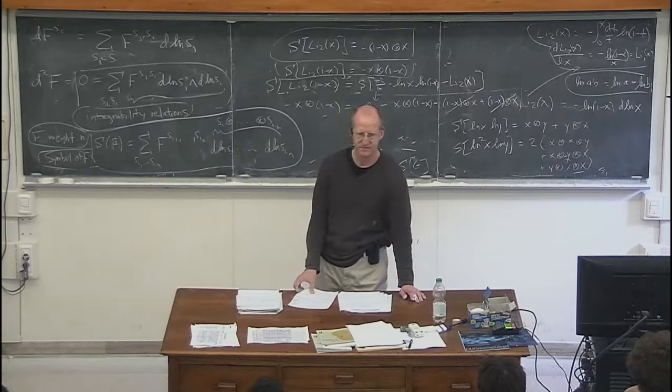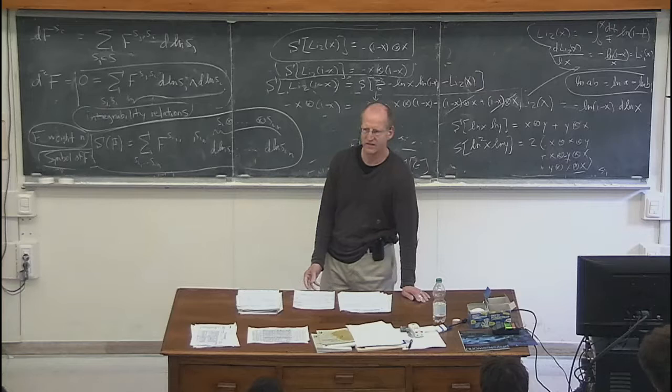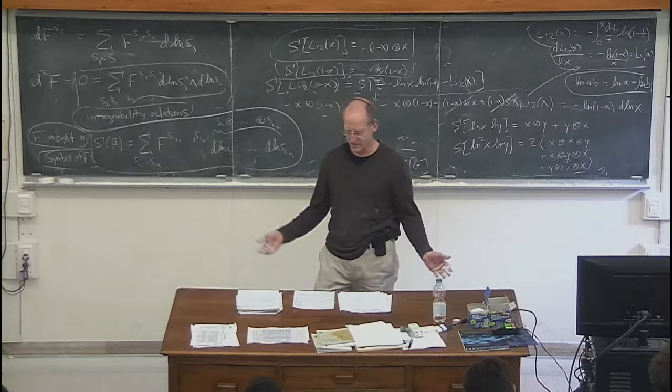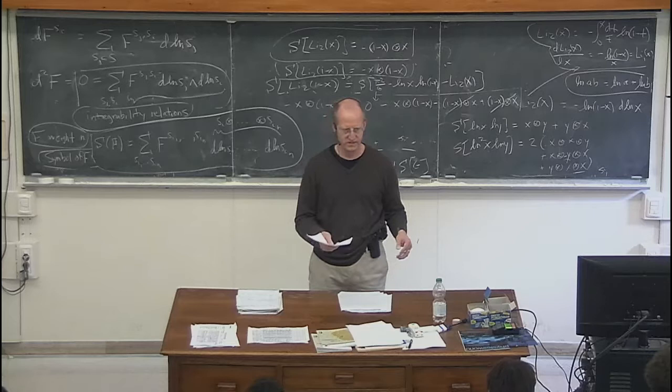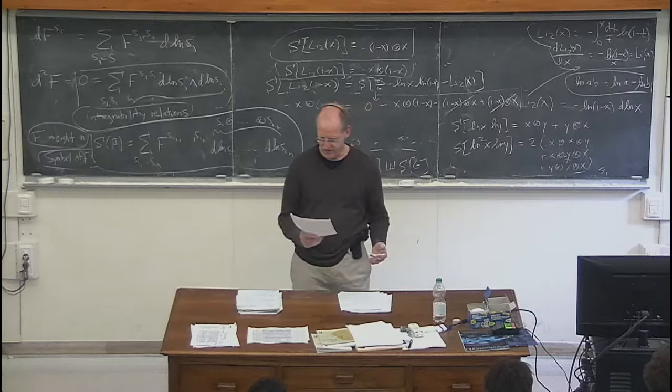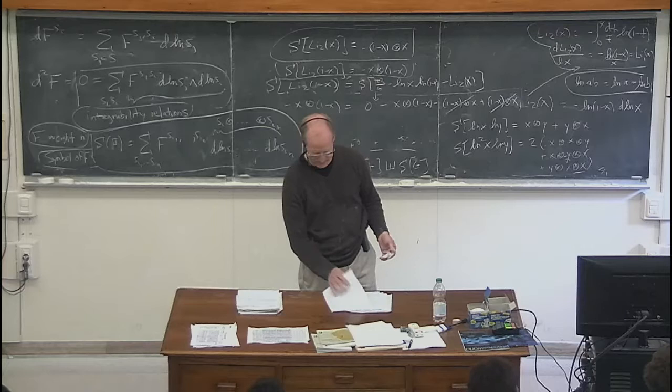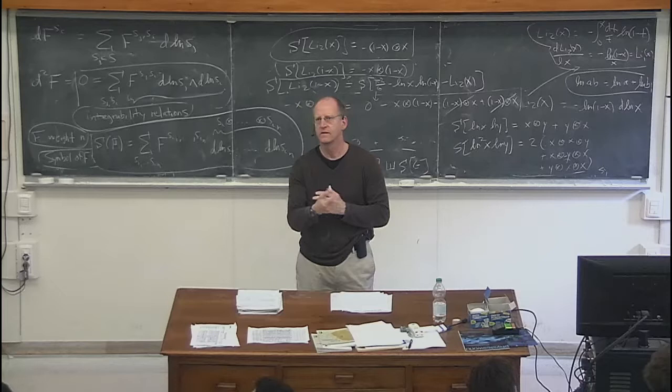The symbol tells you a lot about the function but doesn't give every last detail. For that you have to do more work. But it's quite often useful when calculating an amplitude or an integral entering an amplitude to first work out the symbols, and then later reconstruct what all the zeta values are or give an exact representation in terms of Goncharov polylogs. You can do that by matching the symbol first, and the later steps are often not as hard computationally.